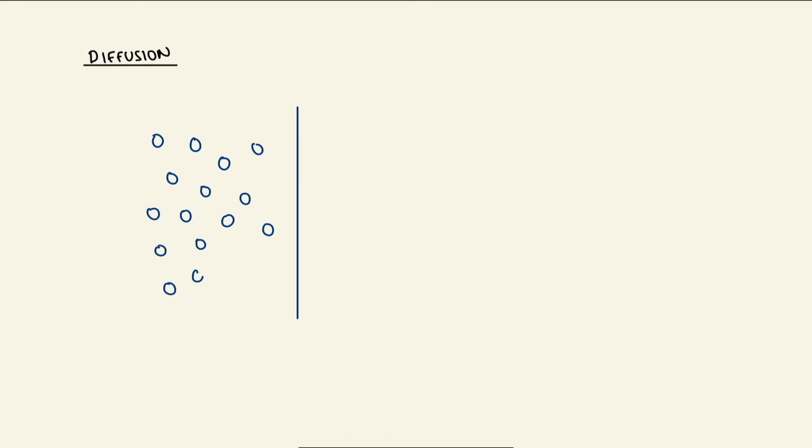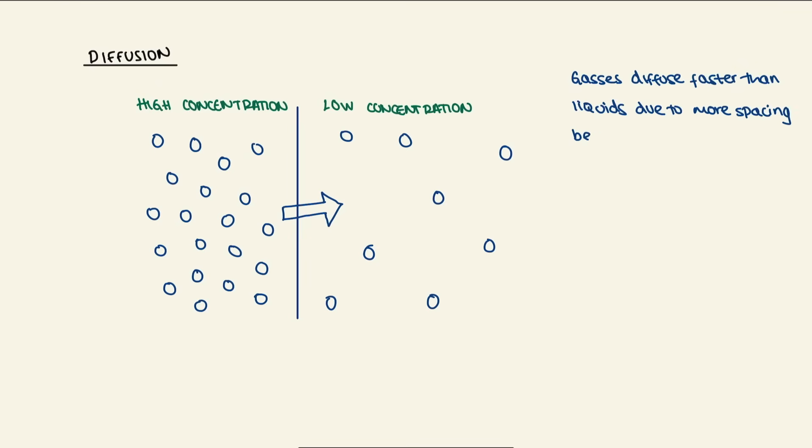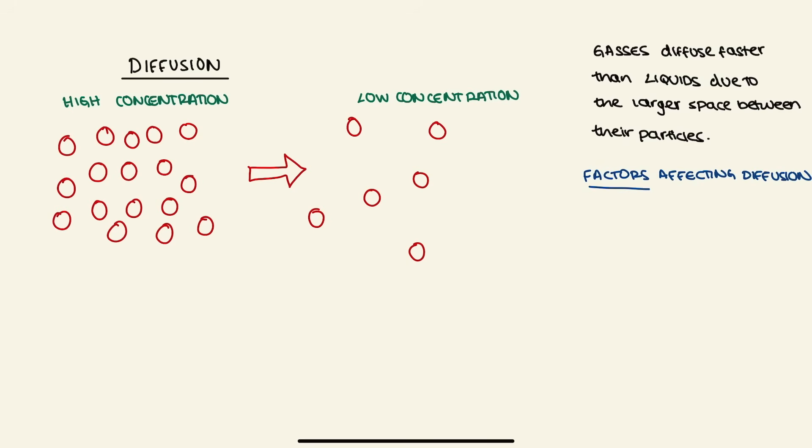Diffusion is simply when particles move from areas of higher concentration to lower concentration, whereby gases diffuse faster than liquids due to the particle spacing. Factors that affect diffusion are temperature and mass.